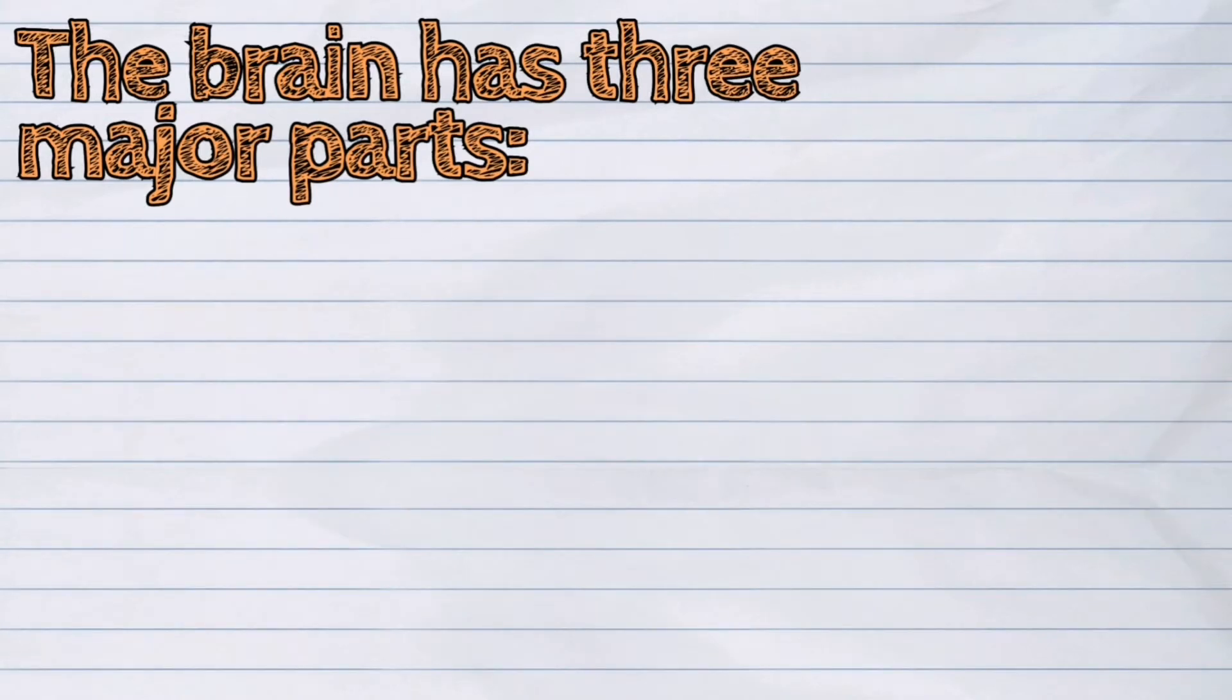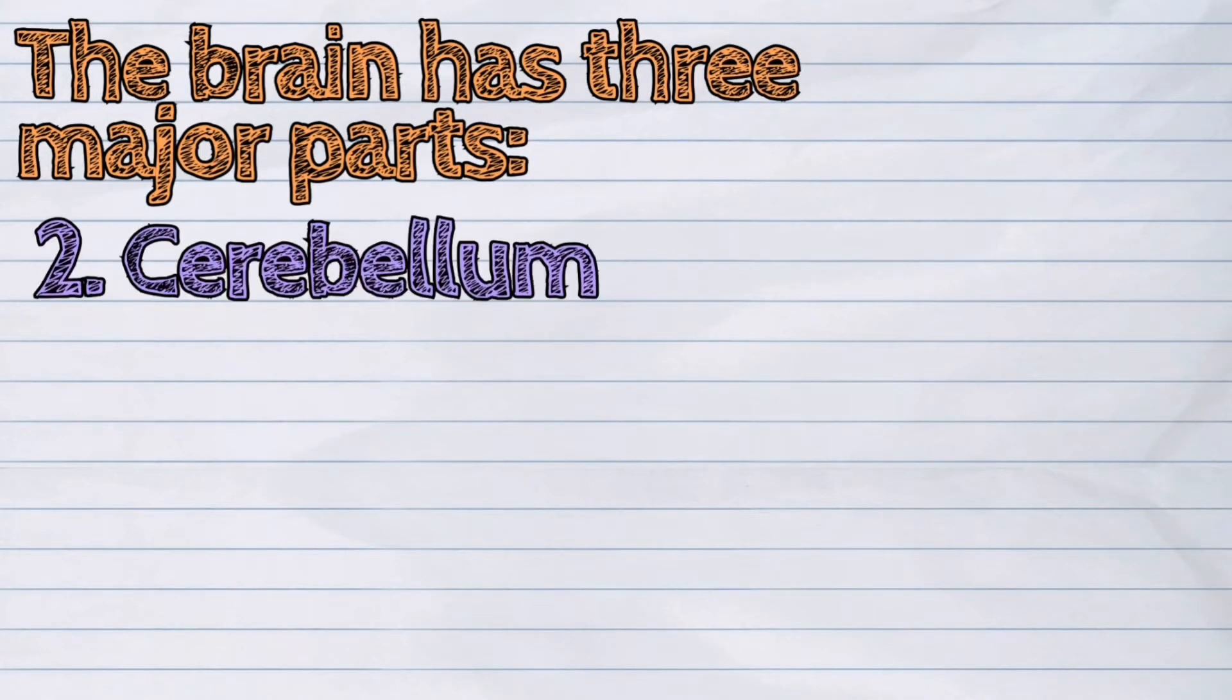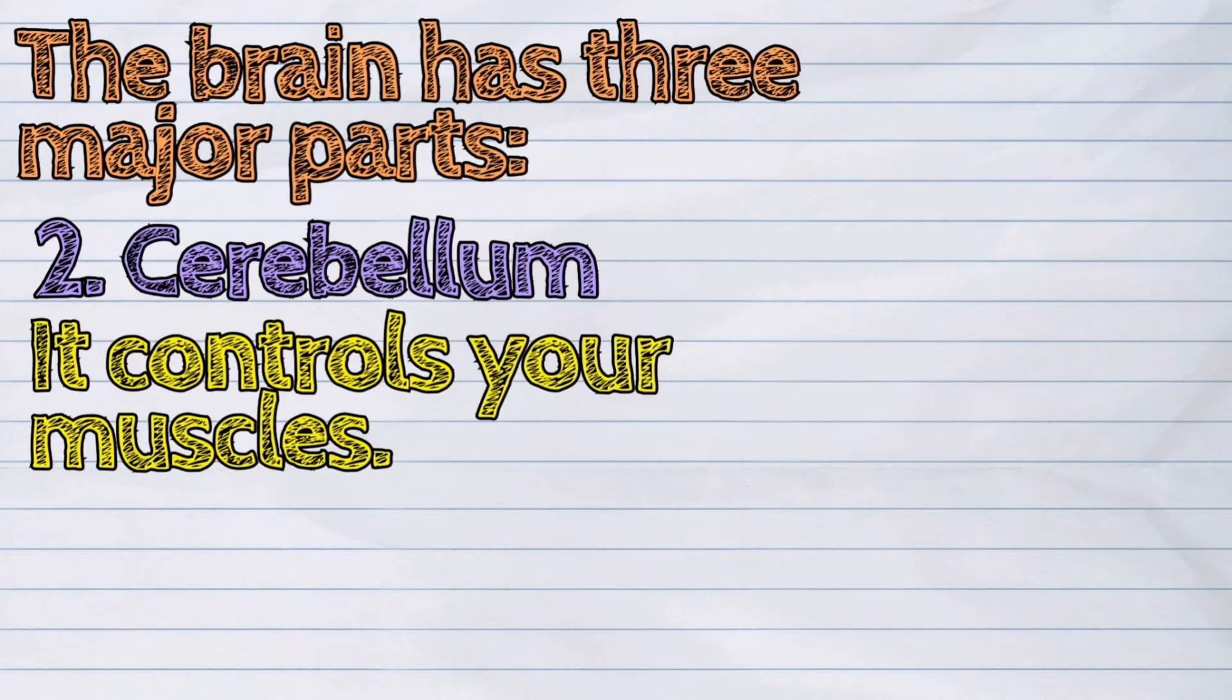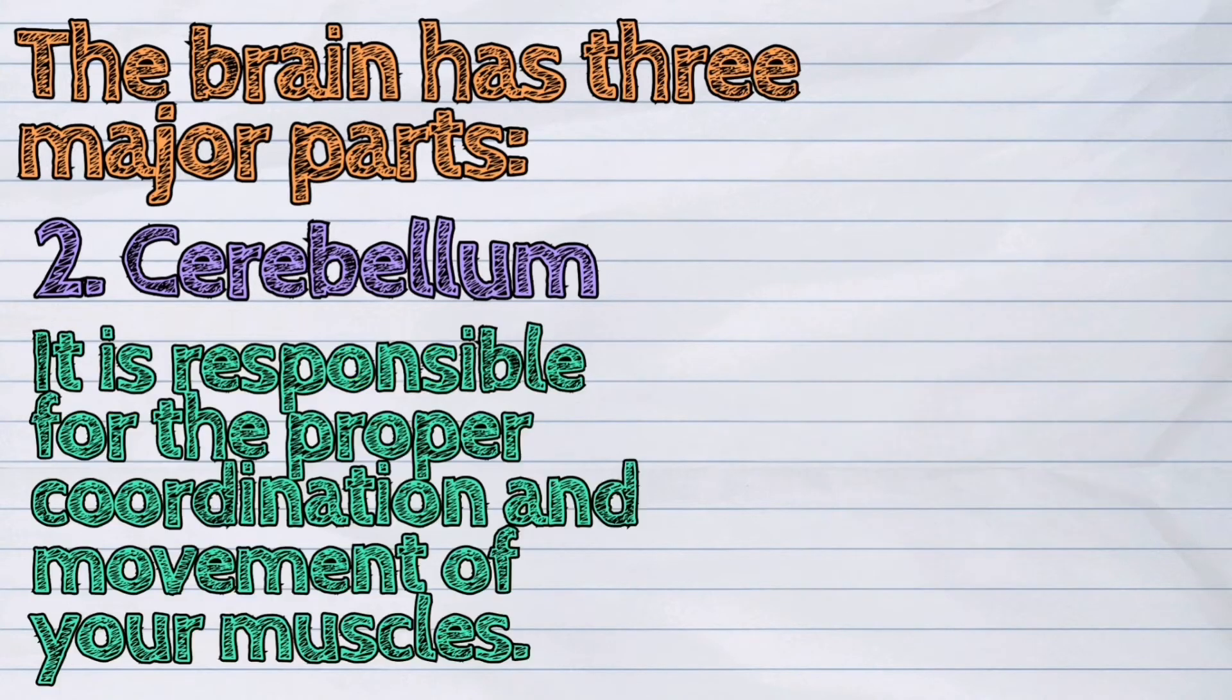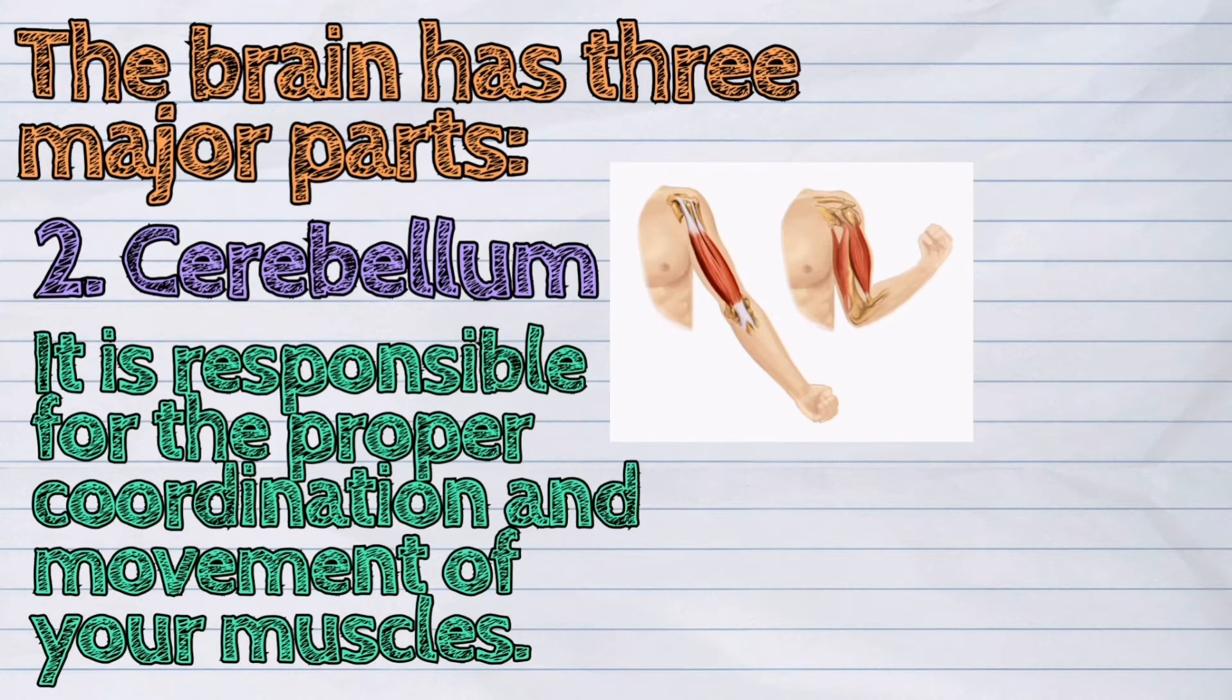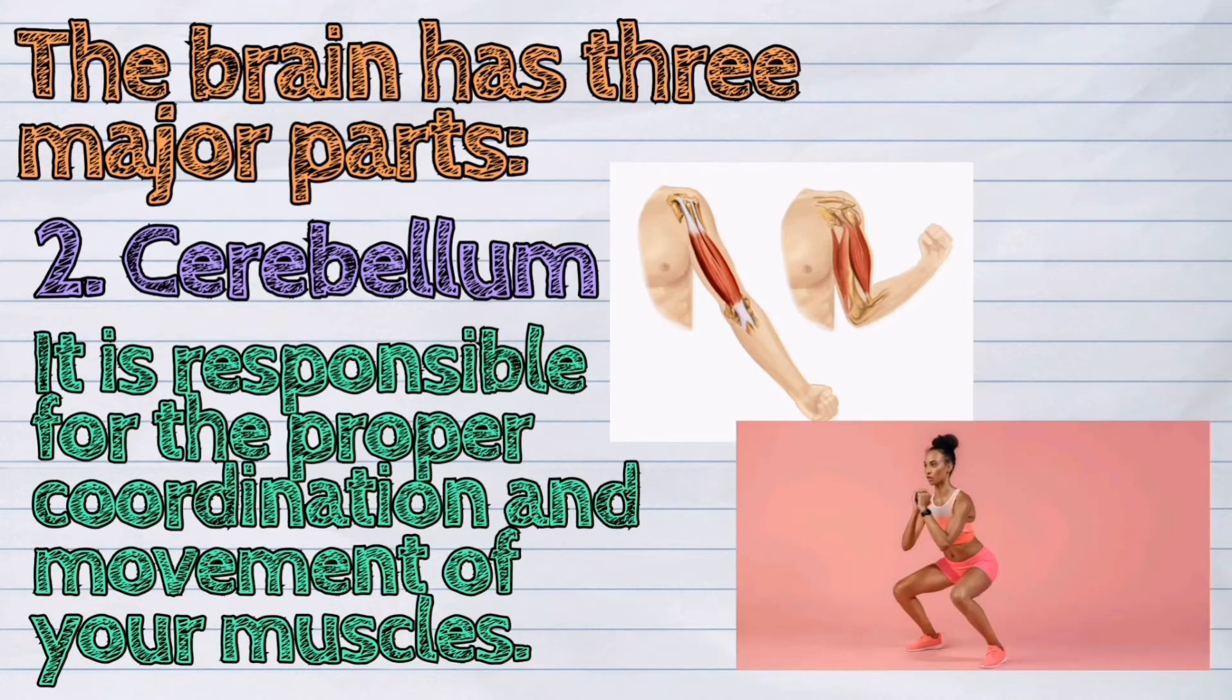The second one is the cerebellum. It controls your muscles. It is responsible for the proper coordination and movement of your muscles.